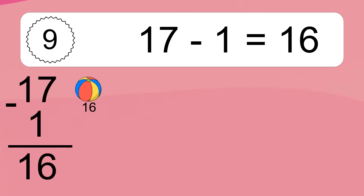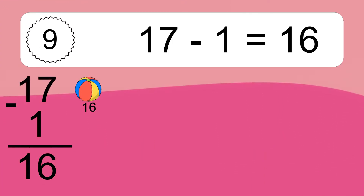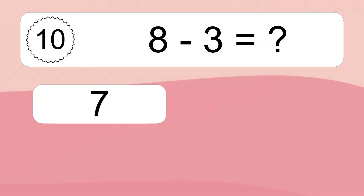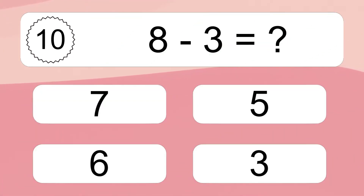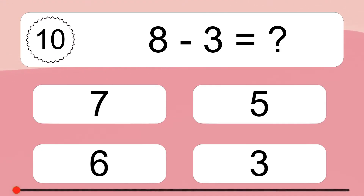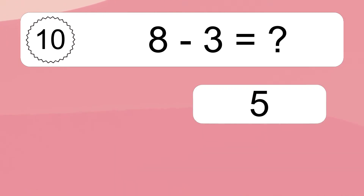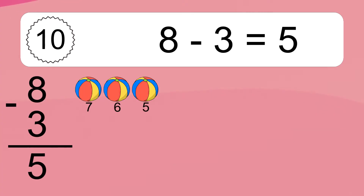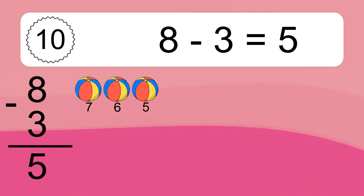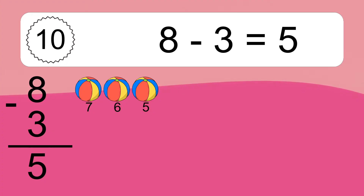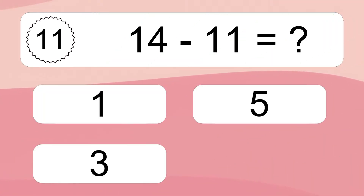17 minus 3 equals what? 18 minus 3 equals 5. Let's count it: 7, 6, 5. 14 minus 11 equals what?